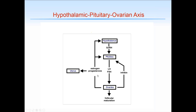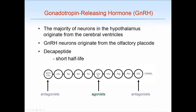The ovaries also produce a peptide called inhibin, which as its name suggests is inhibitory for gonadotrope function with specific effects on the FSH gonadotrope. Regarding GnRH: the majority of neurons in the hypothalamus originate from the cerebral ventricle, but GnRH neurons are different because they actually originate from the olfactory placode. This different embryologic origin does have clinical significance. GnRH is a small decapeptide consisting of 10 amino acids. It's released as pulses and has a very short half-life, so it cannot be measured in the periphery — clinically, we measure peripheral hormones instead.